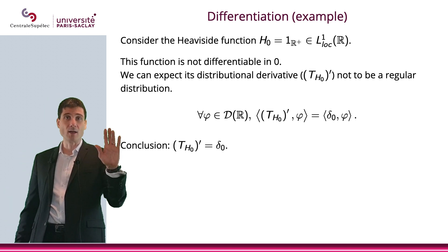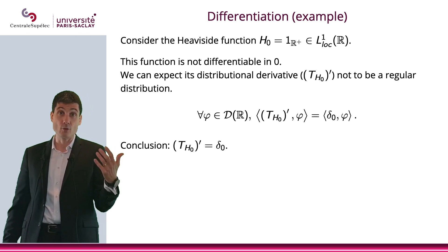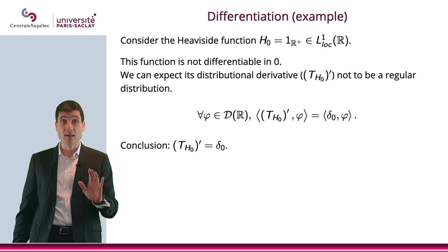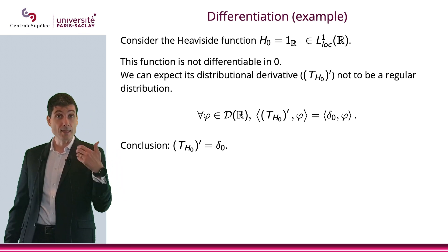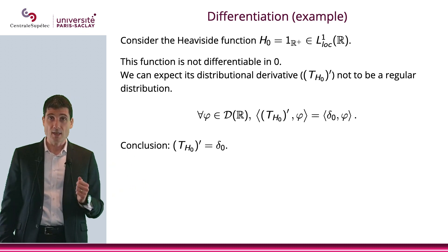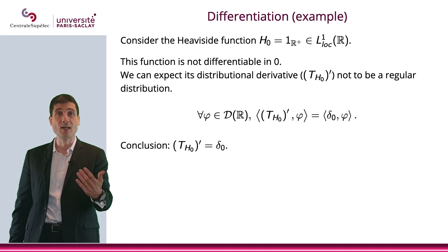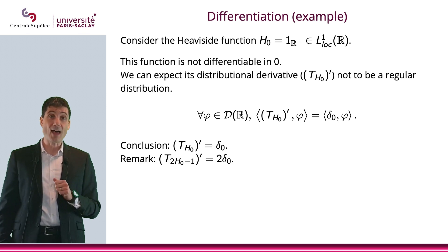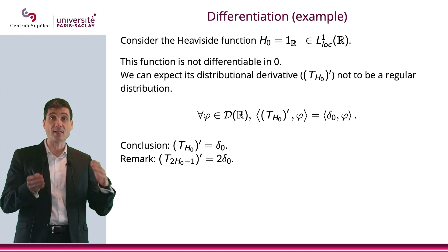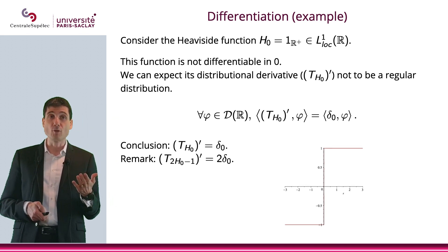The Heaviside function is in L¹_loc but not differentiable in the usual sense — up to now we would say it is not differentiable. Now we say it is differentiable, but the derivative is not a function; it lives in the larger space of distributions. The derivative of the Heaviside function is the Dirac distribution, which is not a regular distribution — it does not come from an L¹_loc function. By the way, if instead you take 2H₀ - 1 (equal to -1 on R⁻ and +1 on R⁺), then the derivative is 2δ₀.